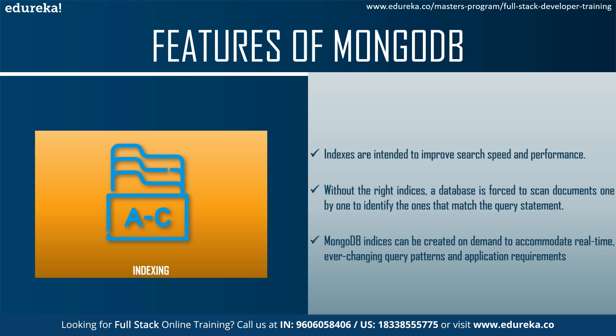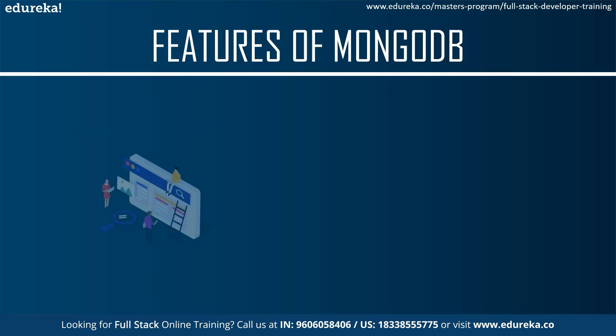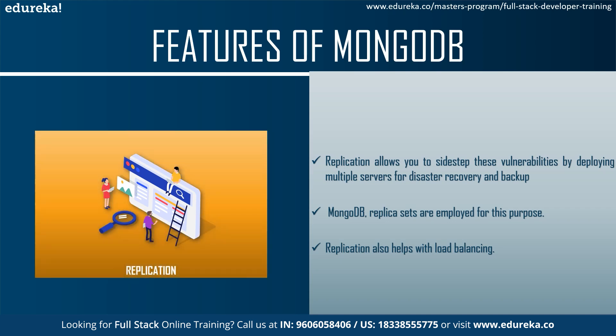Indexing is used for better query executions. If done right, indexes improve search speed and performance; failure to properly define appropriate indices can lead to query execution problems and even load balancing issues. MongoDB allows indexes to be created on demand to accommodate real-time and ever-changing query patterns and application requirements. They can also be declared on any field within any document, including those nested within arrays.